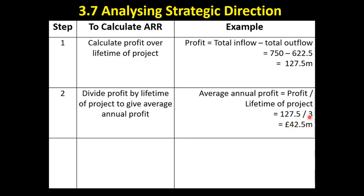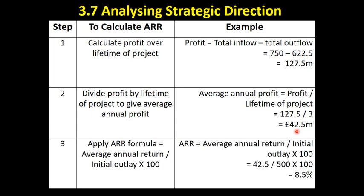So every year on average, it earns a profit of 42.5 million. Now we apply the average rate of return formula: the average annual return of 42.5 million divided by the initial outlay of 500 million, multiplied by 100. That gives us a figure of 8.5%, which tells us that this project earned an annual profit of 8.5% compared to the initial investment.